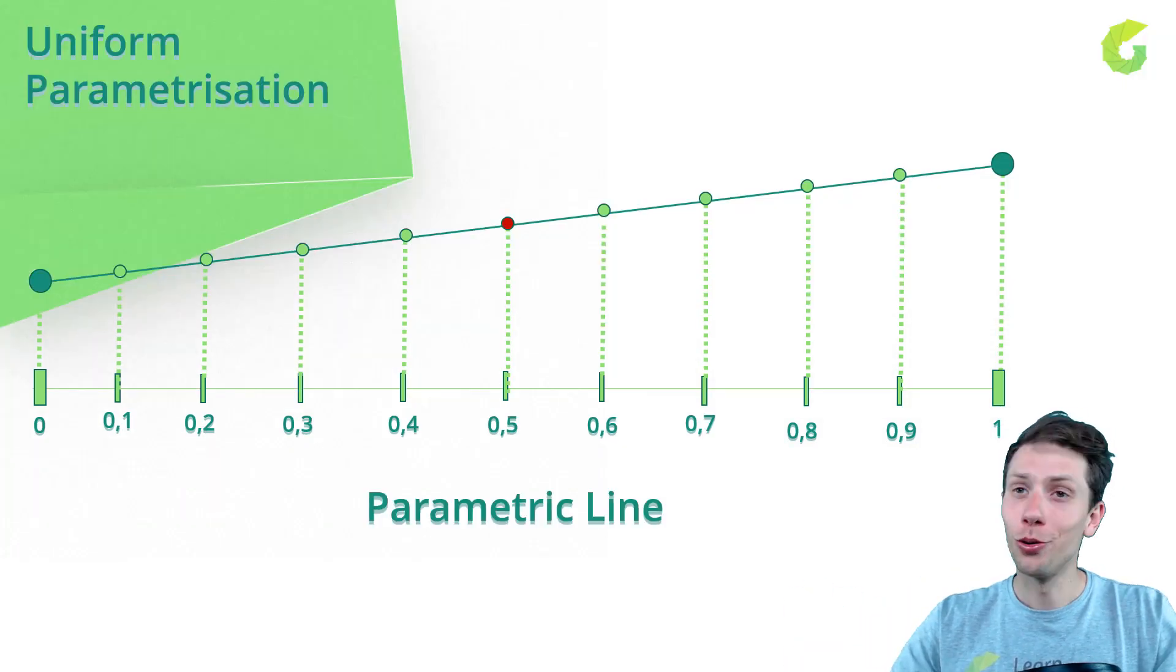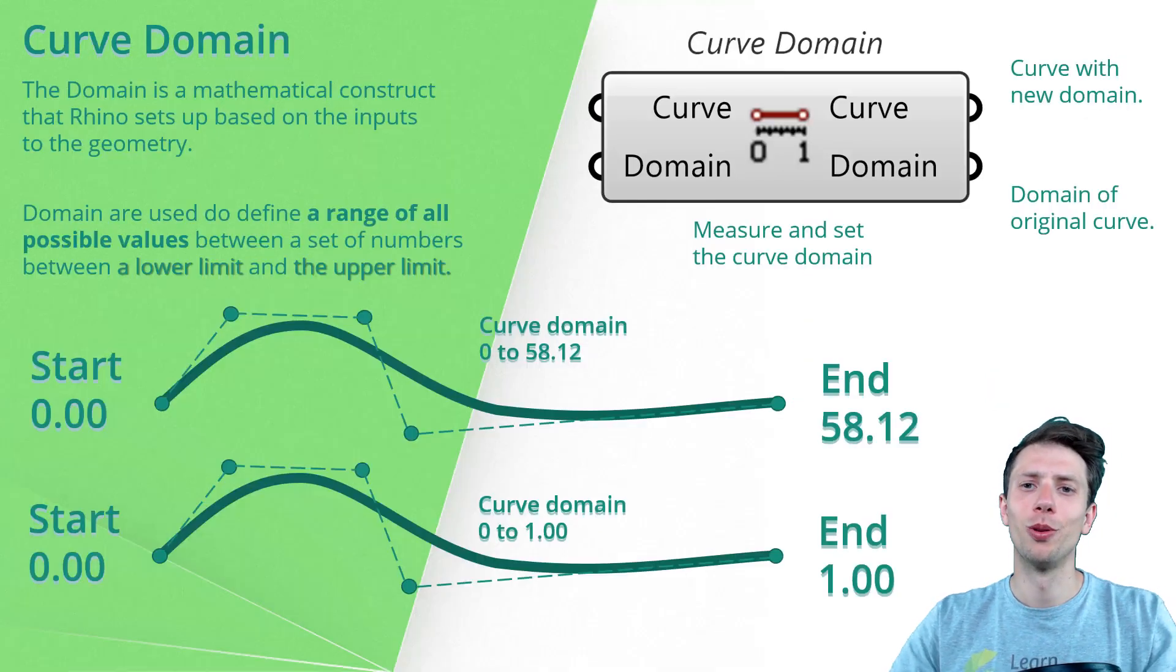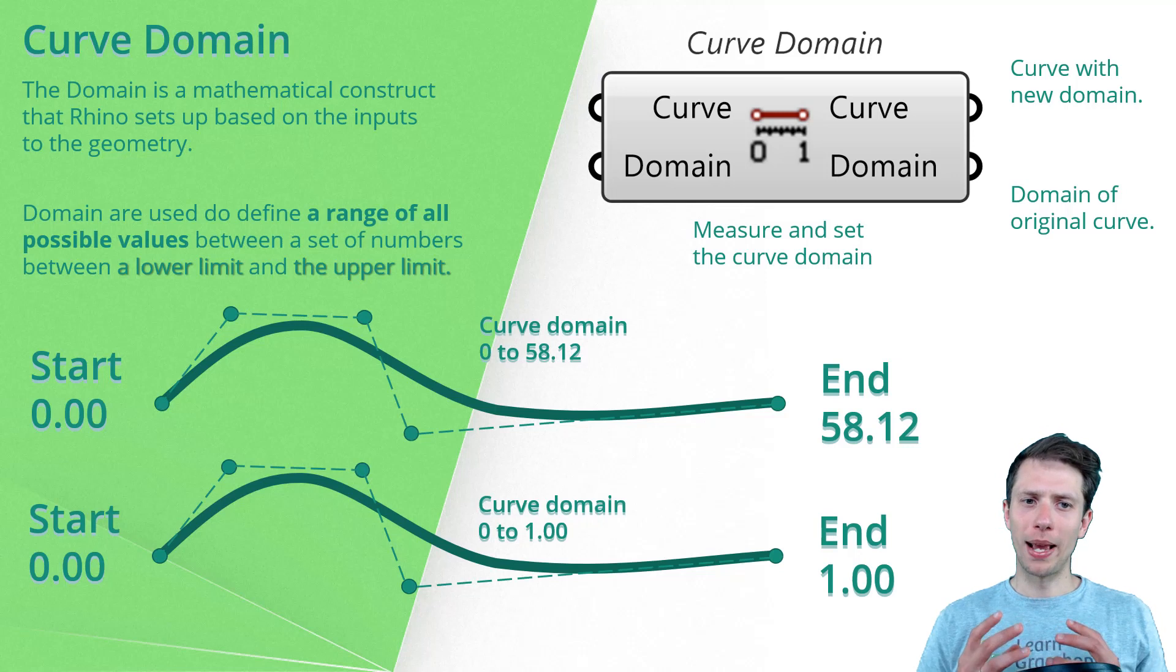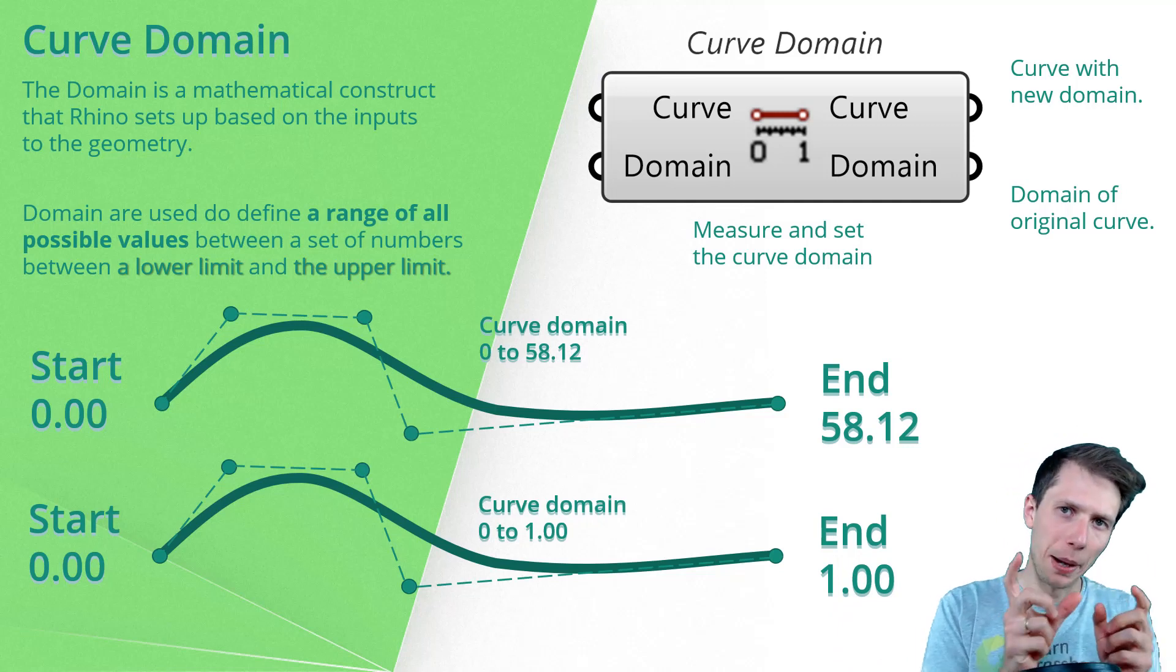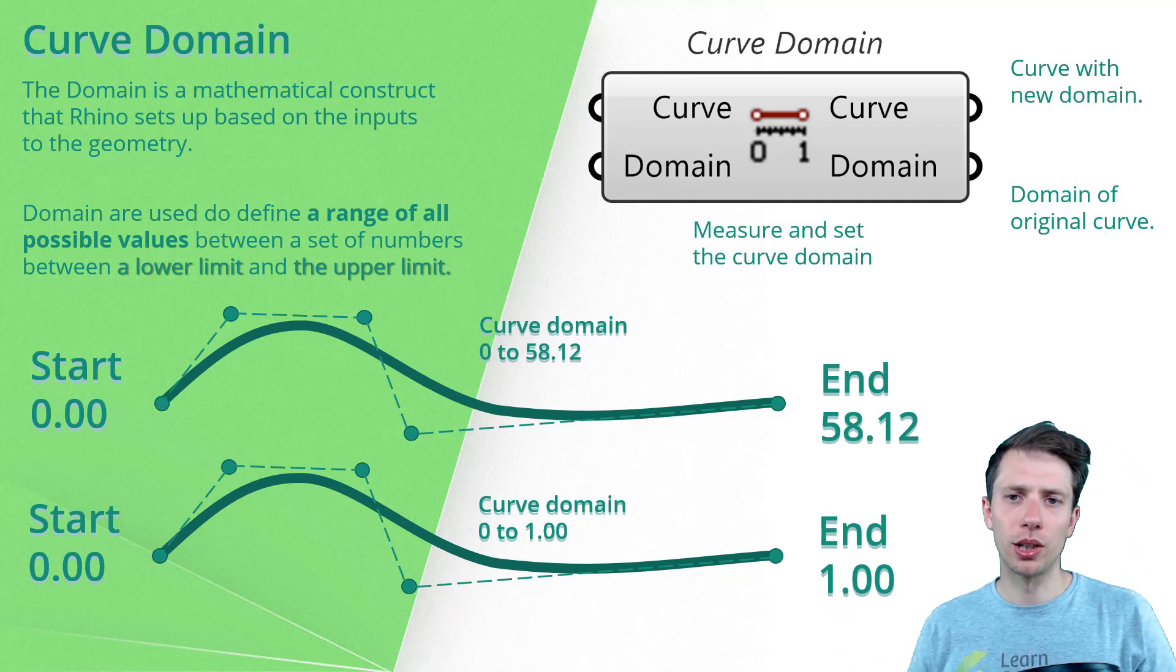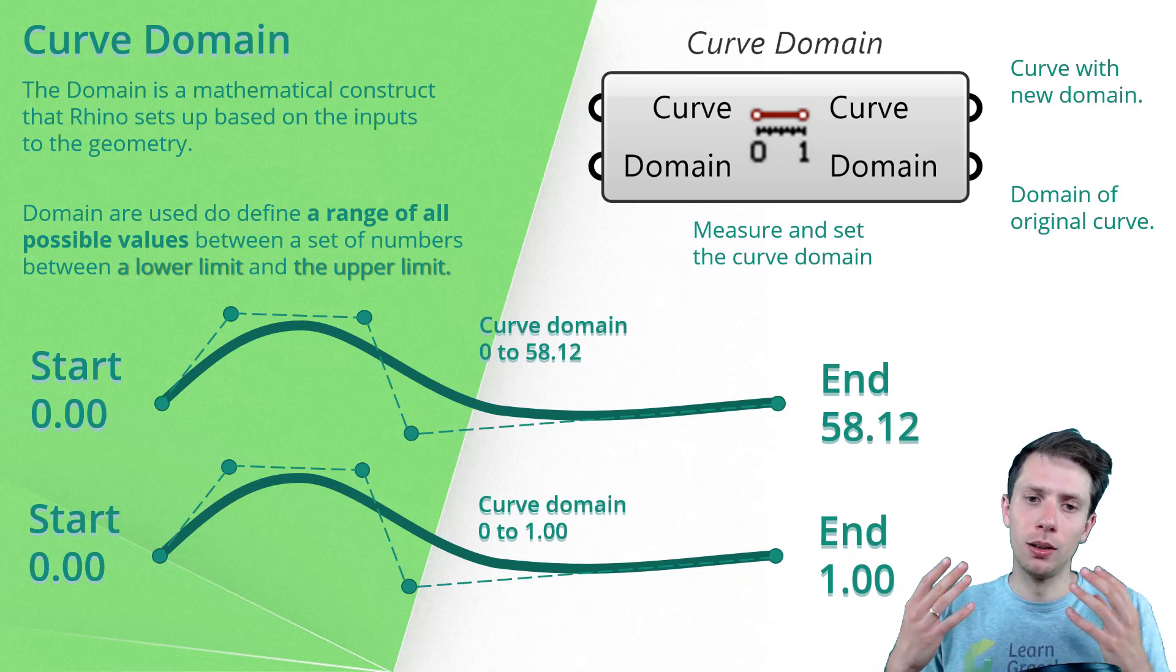All right, so that was about non-uniform and uniform parametrization. Now we can go to the topic of domain. Domains are used to define a range of all possible parameter values that go along the curve between the lower limit and the upper limit. As you remember, we talked about the curve like a polynomial where there is an infinite curve. So actually we are going to just take a part of this curve. There is one component which is called curve domain.